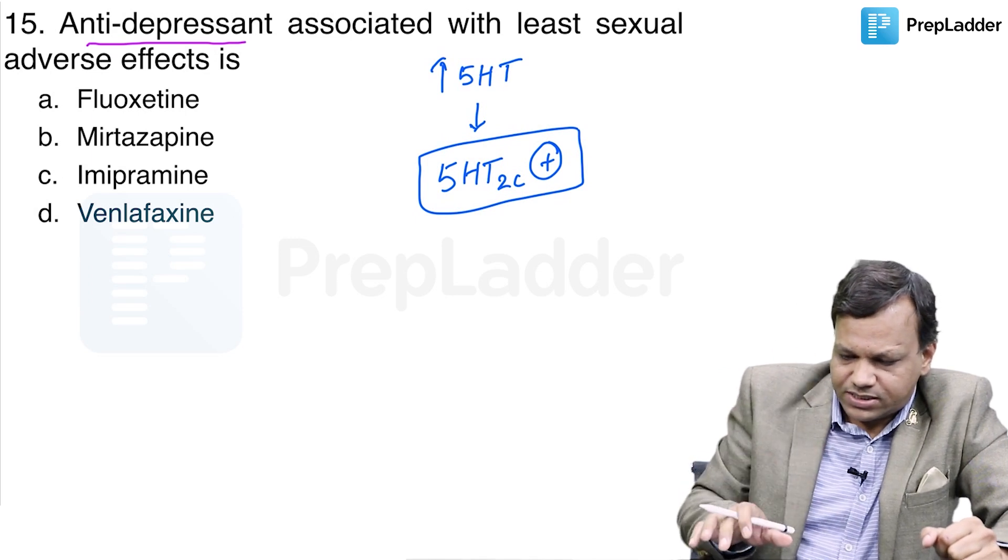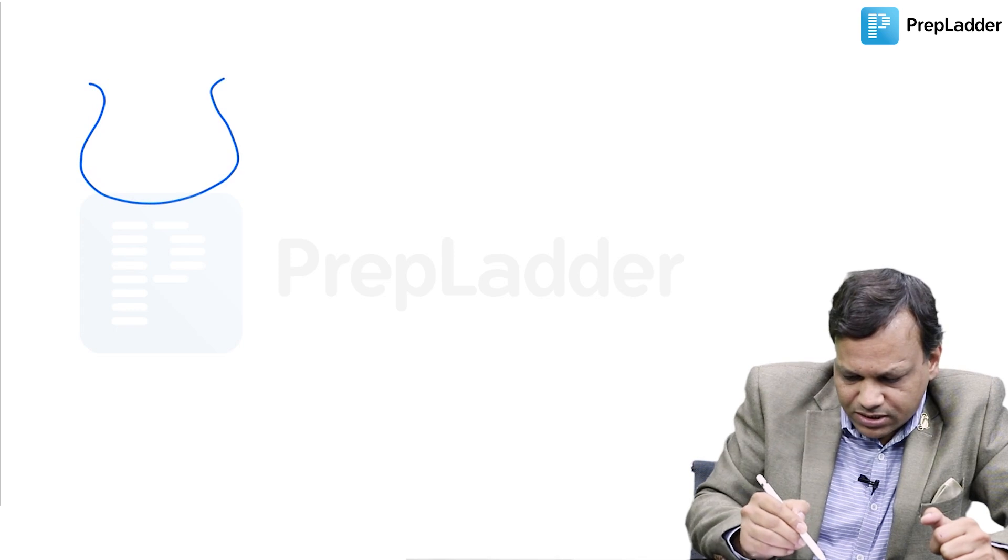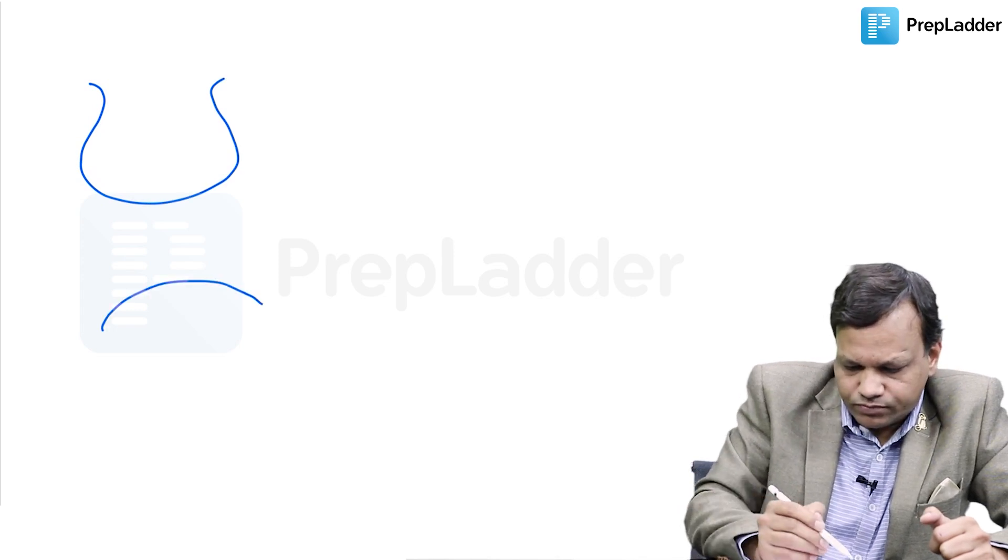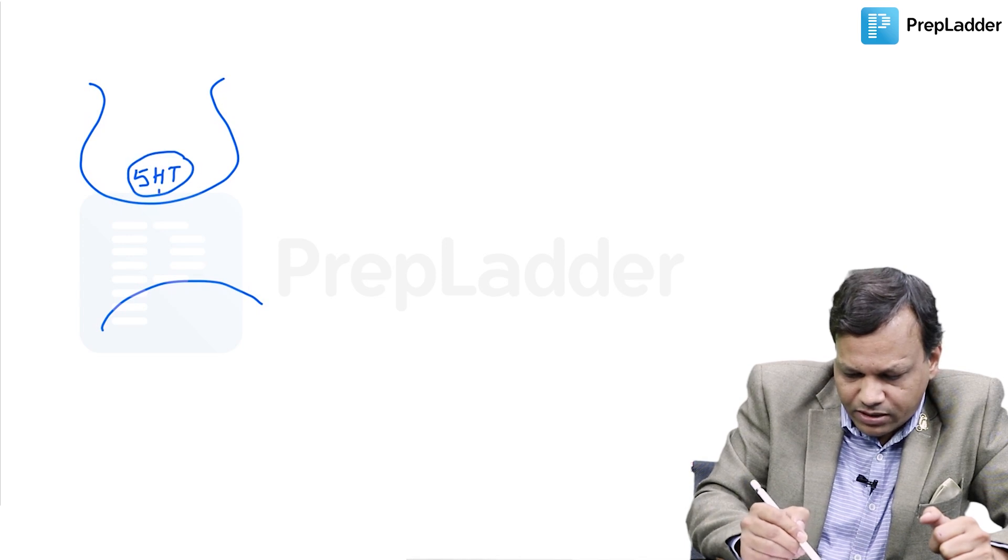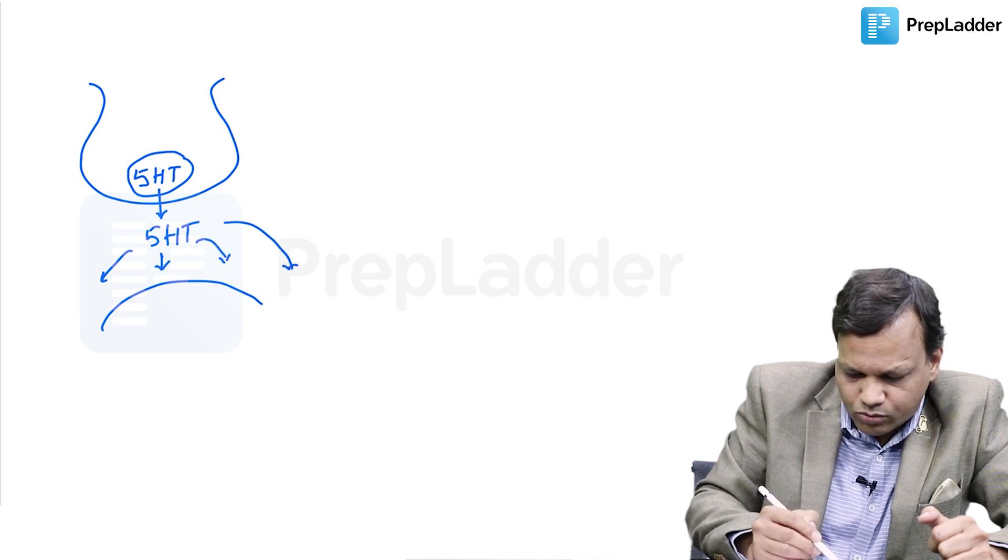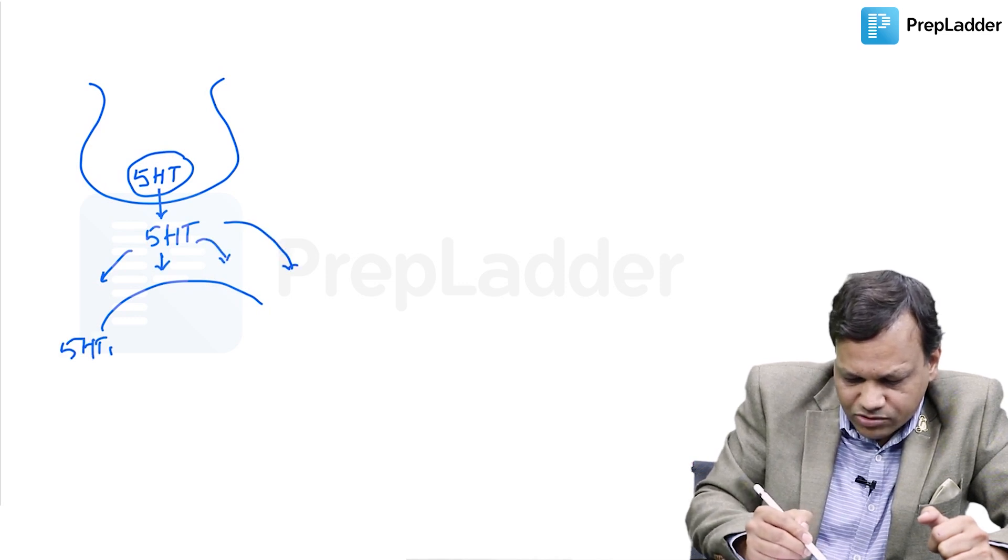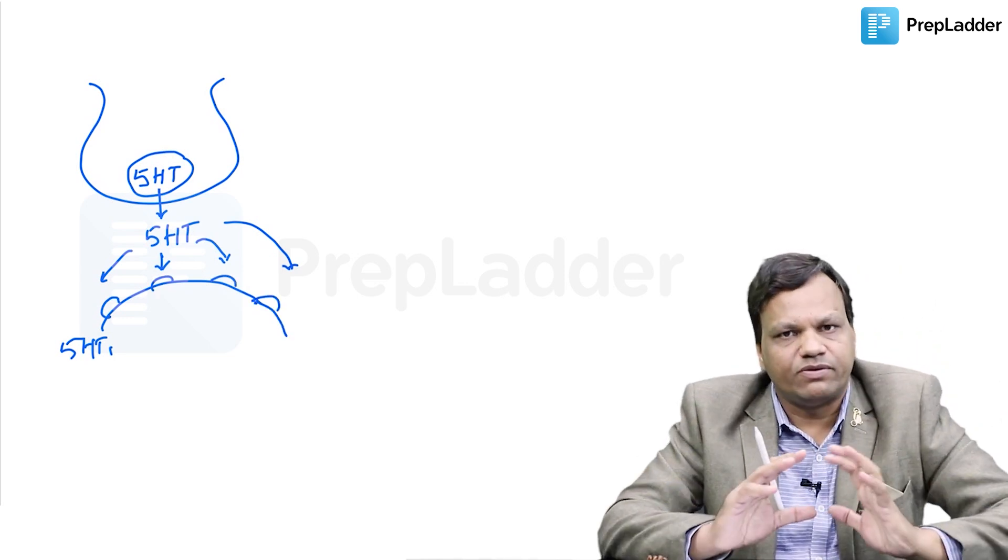First of all, we will discuss how these antidepressant drugs work. This is the serotonergic neuron. Serotonin is present here. Whenever nerve impulse comes, it is released. Then it can stimulate its receptors, particularly 5-HT1, 2, 3 and 4 receptors. So receptors 5-HT1, 2, 3 and 4, they are stimulated. That will treat depression.